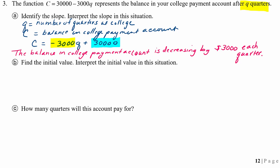Let's write that ordered pair down. So we have (0, 30,000). So what does that represent? In this situation, what information is that giving us?